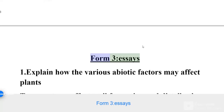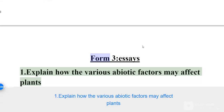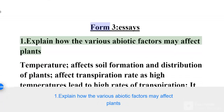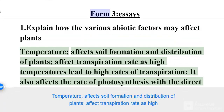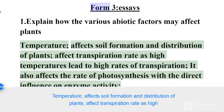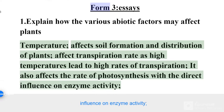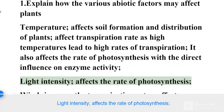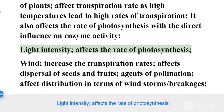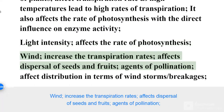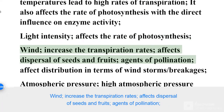Form 3 essays. Explain how the various abiotic factors may affect plants. Temperature affects soil formation and distribution of plants, affects transpiration rate as high temperatures lead to high rates of transpiration. It also affects the rate of photosynthesis with a direct influence on enzyme activity. Light intensity affects the rate of photosynthesis. Wind increases the transpiration rates.